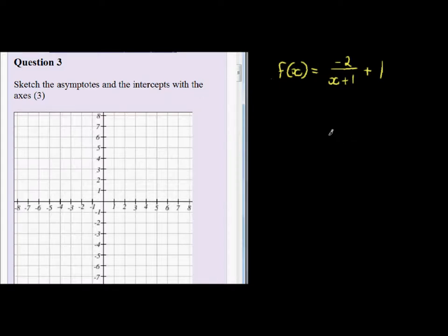Question 3 asks us to sketch the asymptotes and the intercepts with the axes. We've already calculated the intercepts.